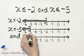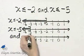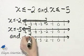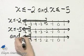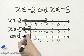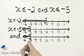I place a closed—or I should say a bracket—at -5, and I shade to the left. Why a bracket at -5? Because -5 is shaded here and here, so it's part of the intersection.